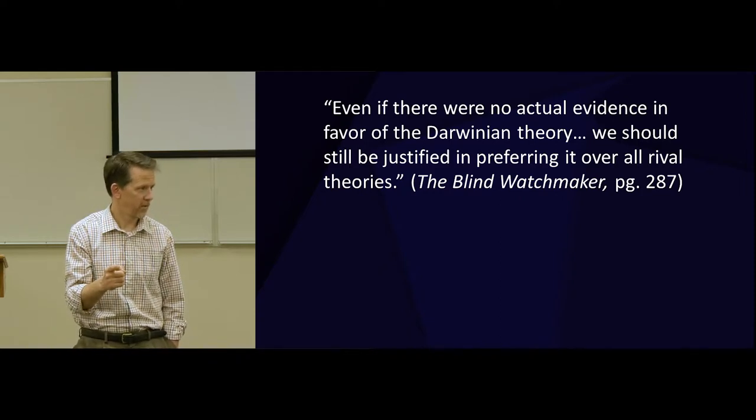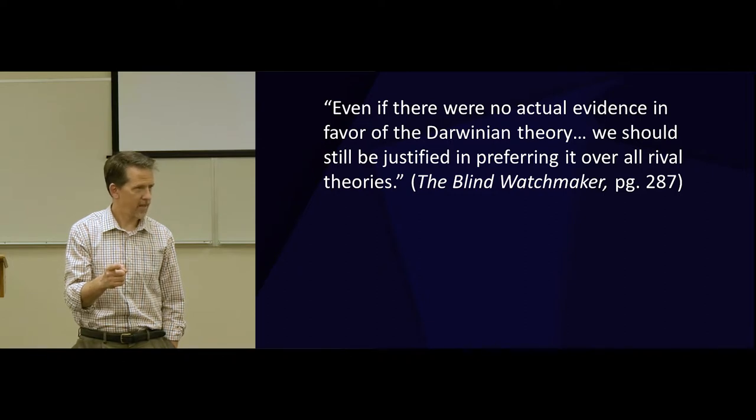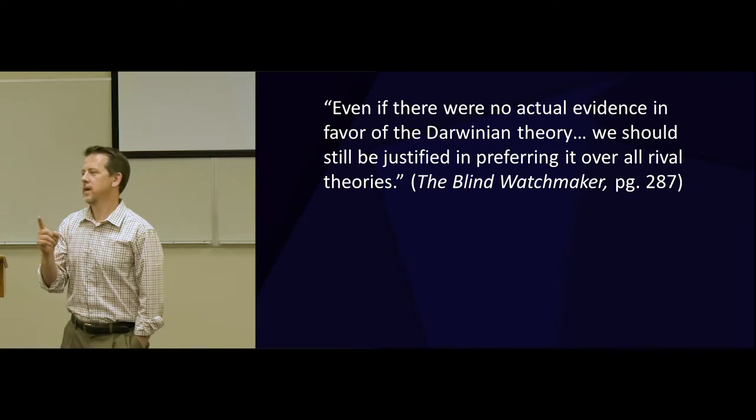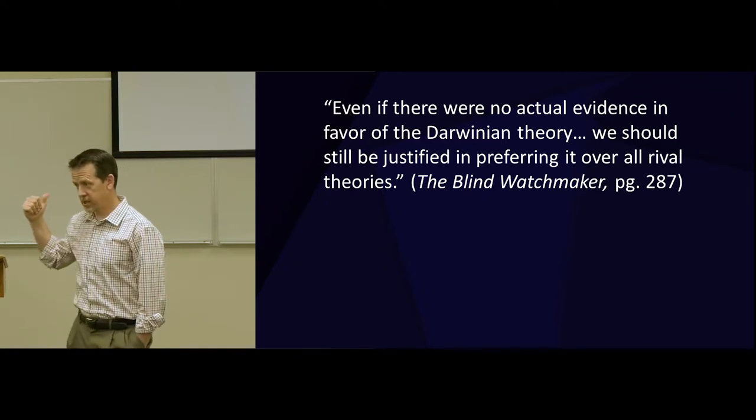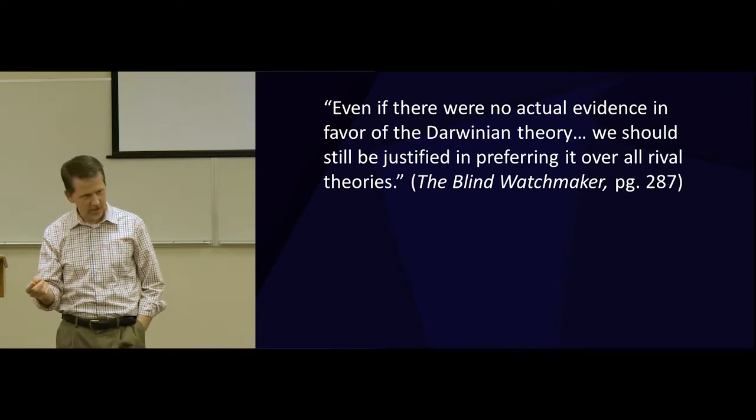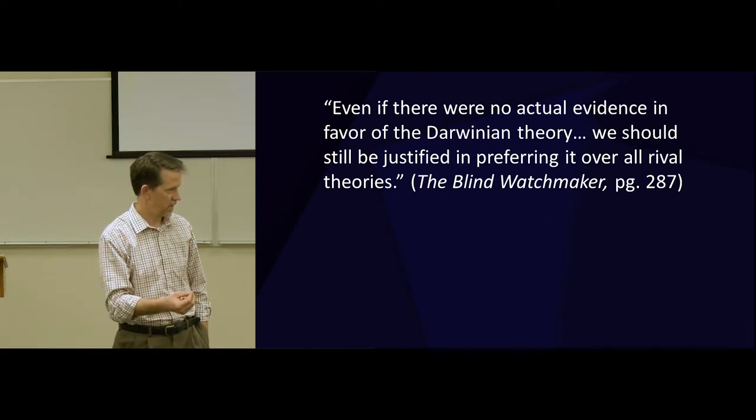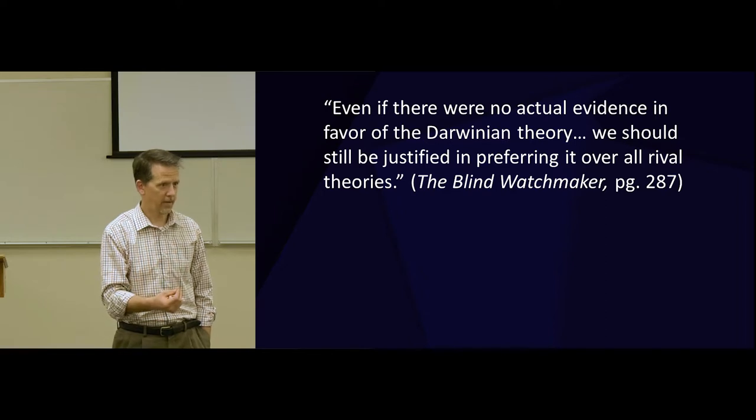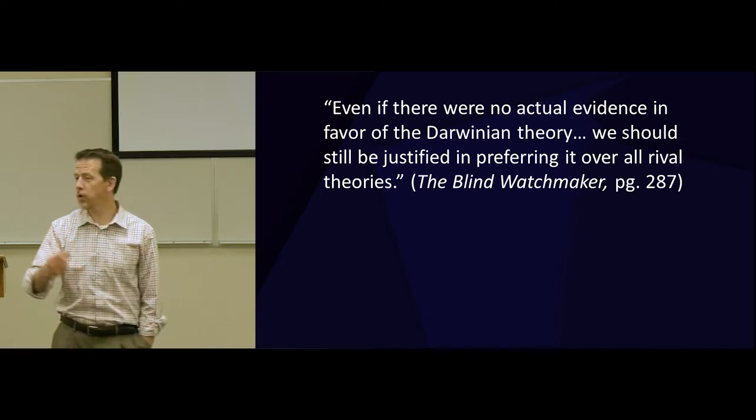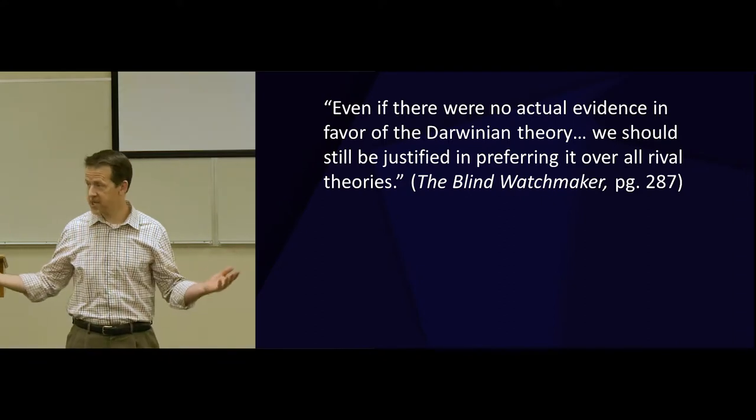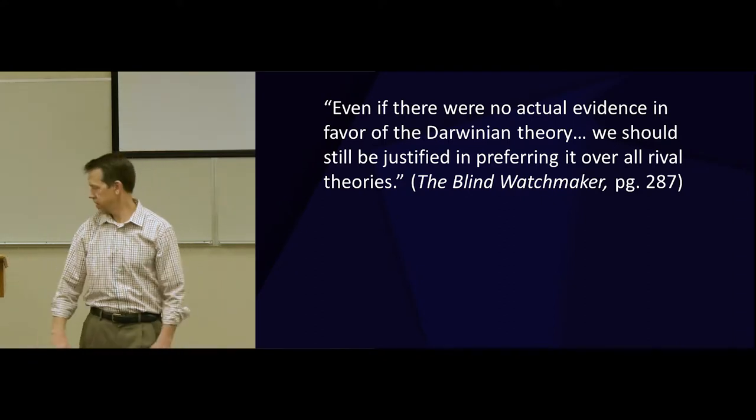Because if materialism is what you have to believe, something like Darwinism has to be true. There is no alternative. Get that? That is critical. The reason Dawkins can make this statement is because he's a materialist. He believes in the philosophy, untestable as it is, of materialism. And he believes it deeply. And so, even if there were no evidence, of course Darwinism is true. What other options has he got? There is none.